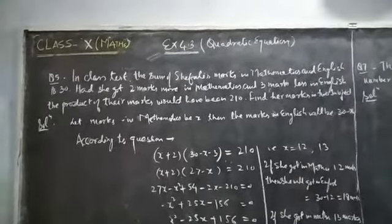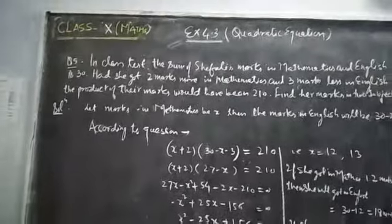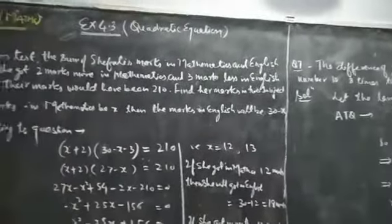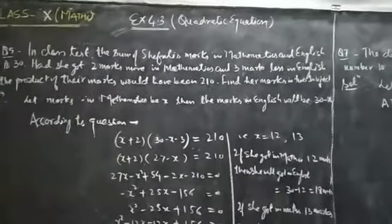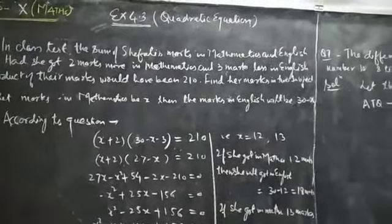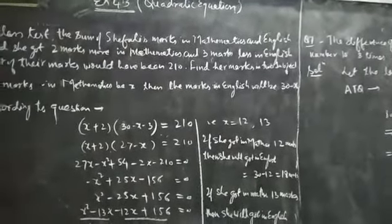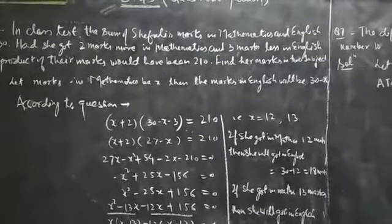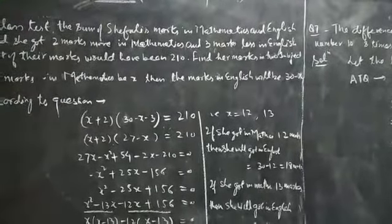In class state, the sum of Cephali's marks in mathematics and English is 30. Had she got two marks more in mathematics and three marks less in English, the product of their marks would have been 210. Find her marks in two subjects. See the solution. Let marks in mathematics be x. Then the marks in English will be 30 minus x.